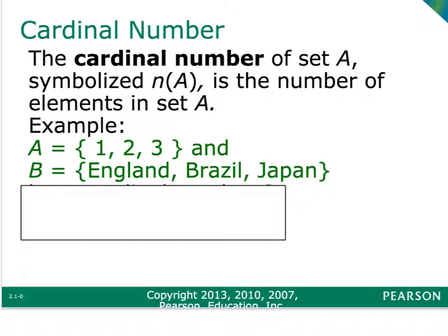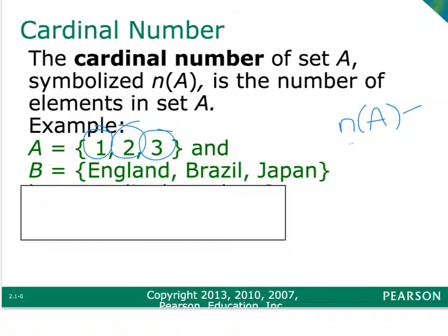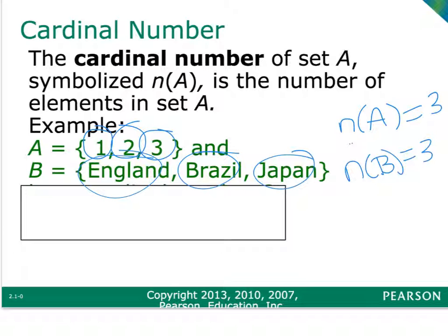If you're asked for the cardinal number, they will symbolize that with a lowercase n and then put the name of the set in parentheses. All that is asking you is how many numbers are in the set. So if set A is {1, 2, 3} and they want the cardinal number, you count the objects — set A has three objects, so the cardinal number of set A is three. If set B is {England, Brazil, Japan}, the cardinal number of set B is also three because they have the same number of elements.